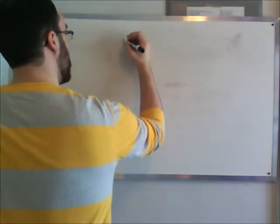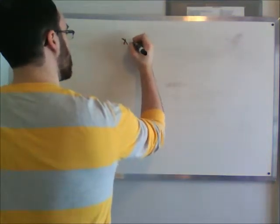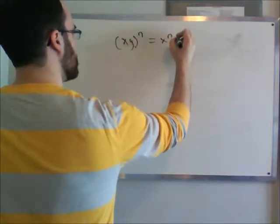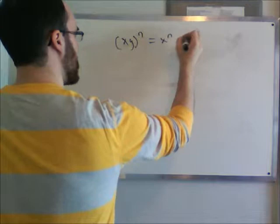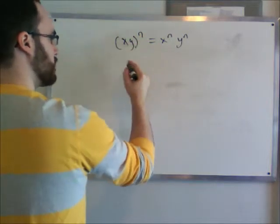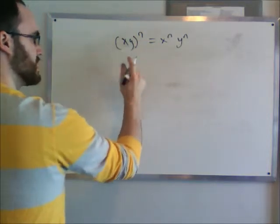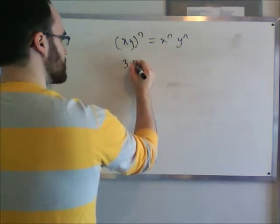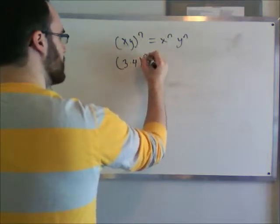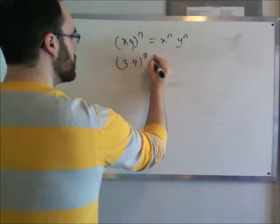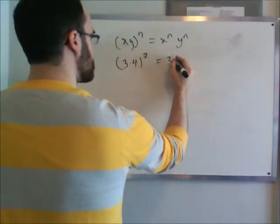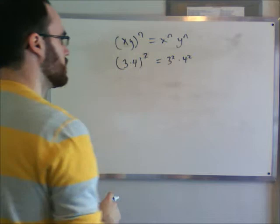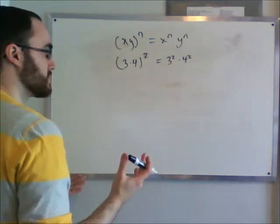The next law: if we have (x · y) to the n, you get x to the n times y to the n. This exponent can be brought into both terms, and that applies with different bases as well. So if we have 3 times 4, all to the power of 2, we can say that is 3 squared times 4 squared.